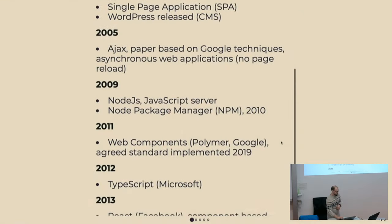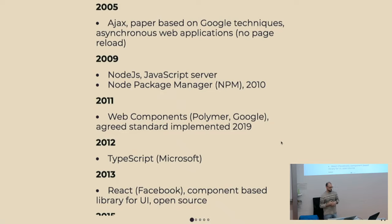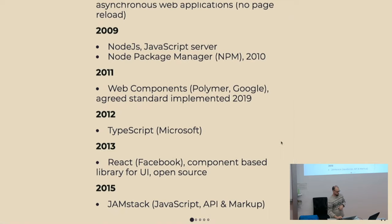In 2009 we had Node.js, which moved JavaScript onto the backend — server side. It basically took Google's V8 JavaScript engine and made an interpreter where you could make a server. With that also came the famous Node Package Manager, NPM, also used today. This enabled people to write JavaScript libraries and push them to NPM.